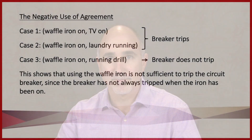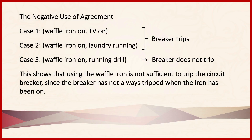So let's look at some examples. You should be able to recognize fairly easily that this is an example of the use of agreement. We have an independent variable — the waffle iron being on — that's present in all three cases. However, notice what's happening over on the right-hand side of the diagram. In the first two cases, the breaker is tripping. However, in case three, the breaker did not trip. What this shows us is that the waffle iron being on is not sufficient to trip the circuit breaker. So we're using the method of agreement negatively to show that there's not a causal relationship between the two events.